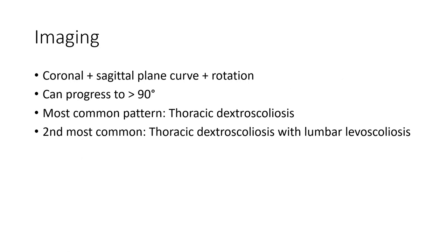Imaging: coronal plane scoliosis curve with rotation can progress to more than 90 degrees. The most common pattern is thoracic dextroscoliosis. The second most common is thoracic dextroscoliosis with lumbar levoscoliosis.